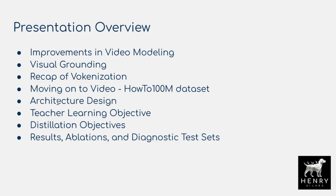Then we'll look at the architecture design of training the teacher model — exactly how they encode the video representation using a two-dimensional pre-trained image encoder, combining that with a three-dimensional video feature extractor, fusing these features to represent the video data, and combining that with the text representation as well. This makes up the teacher learning objective, particularly explaining what the hinge loss is and how it's used for self-supervised learning with HowTo100M.